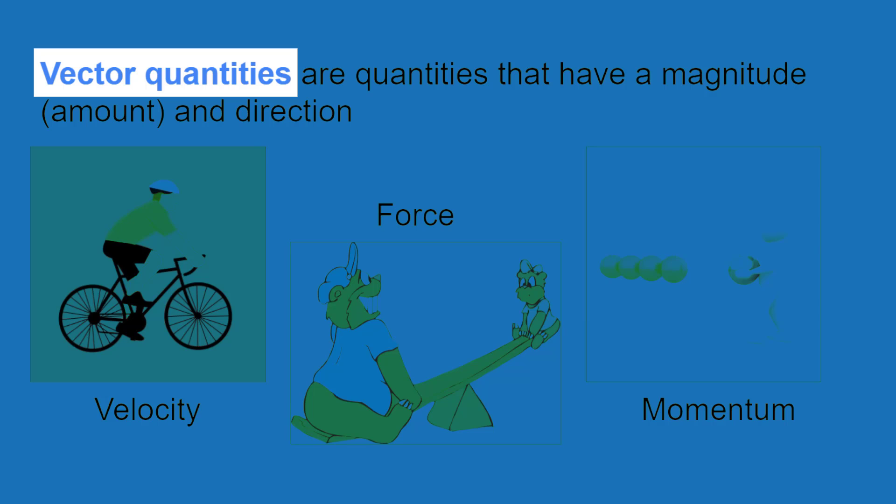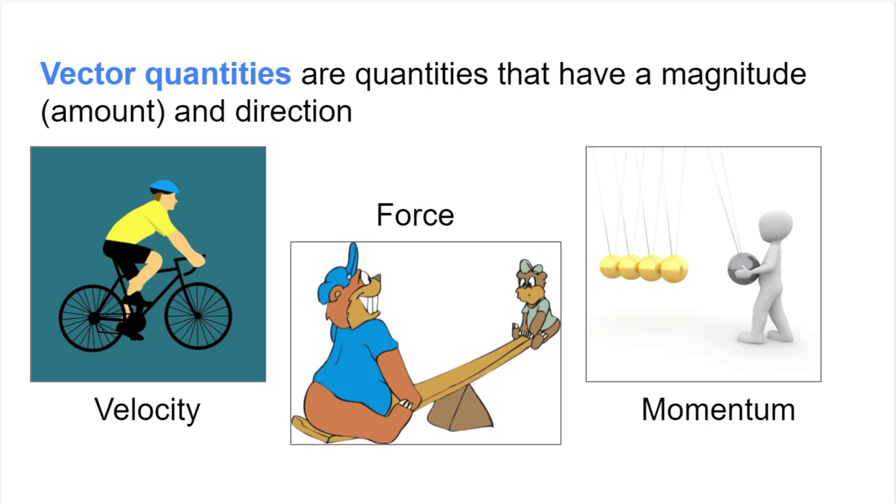Vector quantities are similar to scalar quantities, but there is one main difference between the two. Vector quantities are quantities that have a magnitude and direction. A few examples of vector quantities are velocity, force, and momentum.